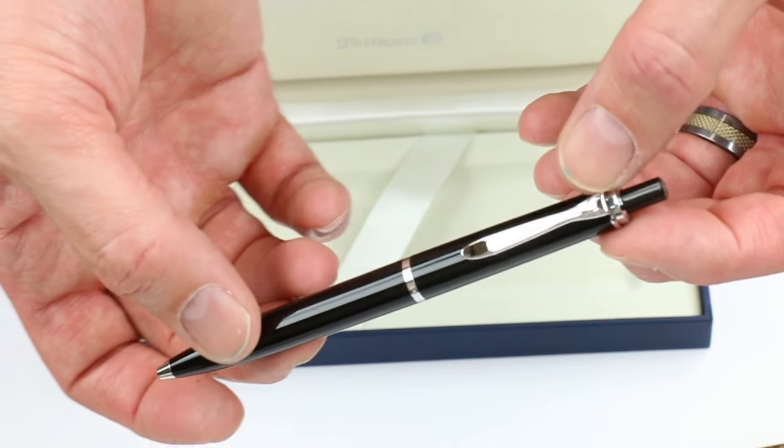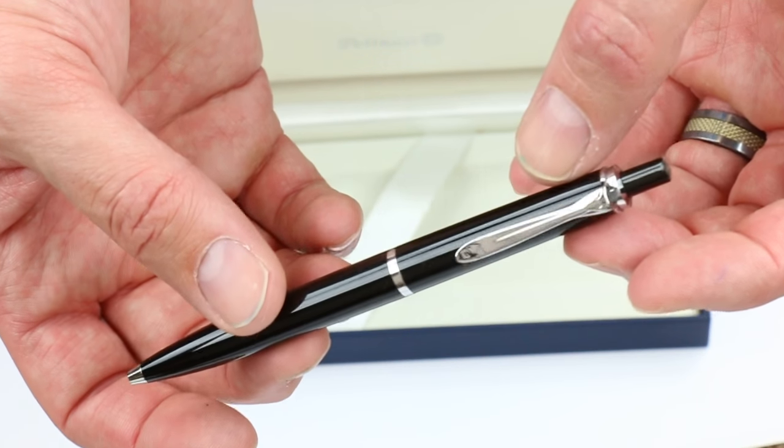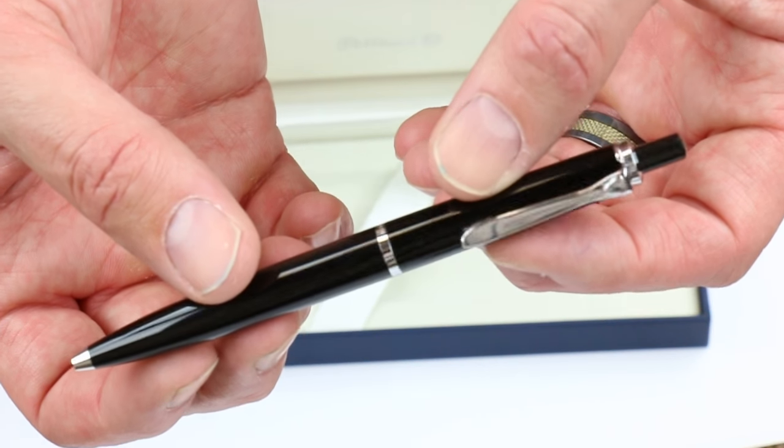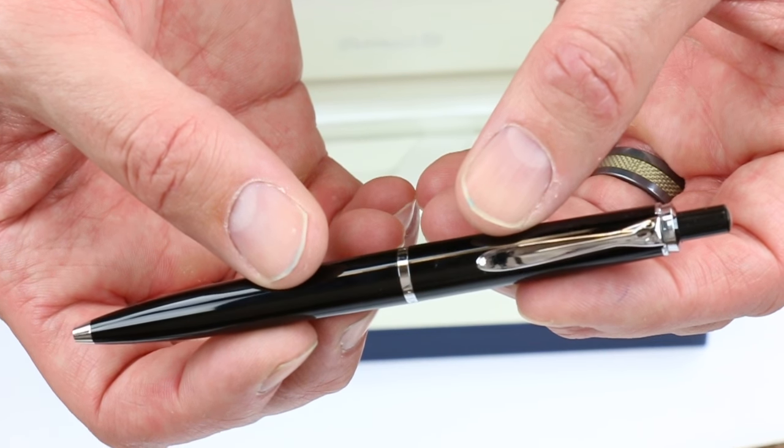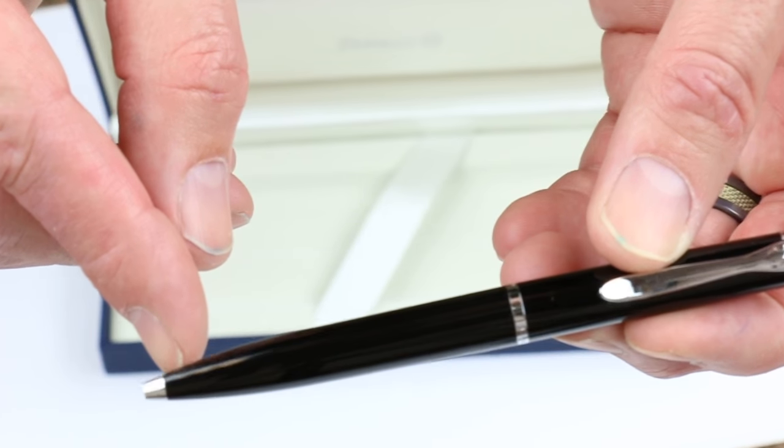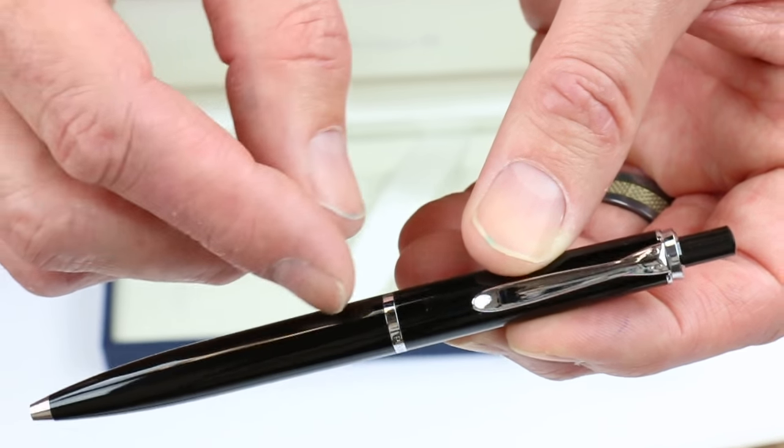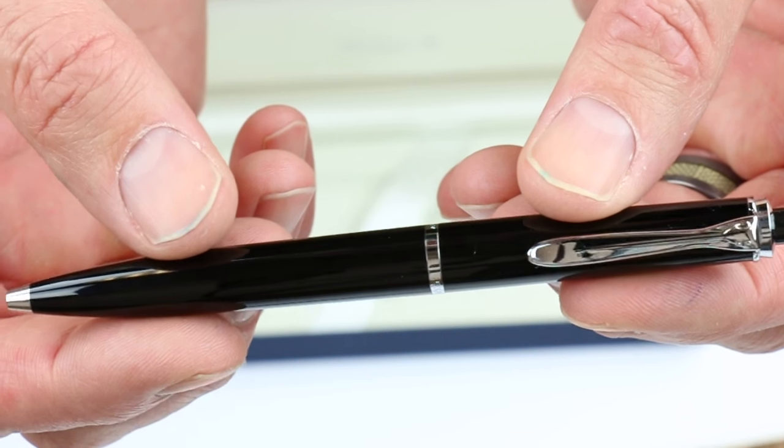Of course we have the Pelican K205 ballpoint pen. The 205 has silver trim. You can see the chrome tip on the pen and a glossy black resin cap and barrel.